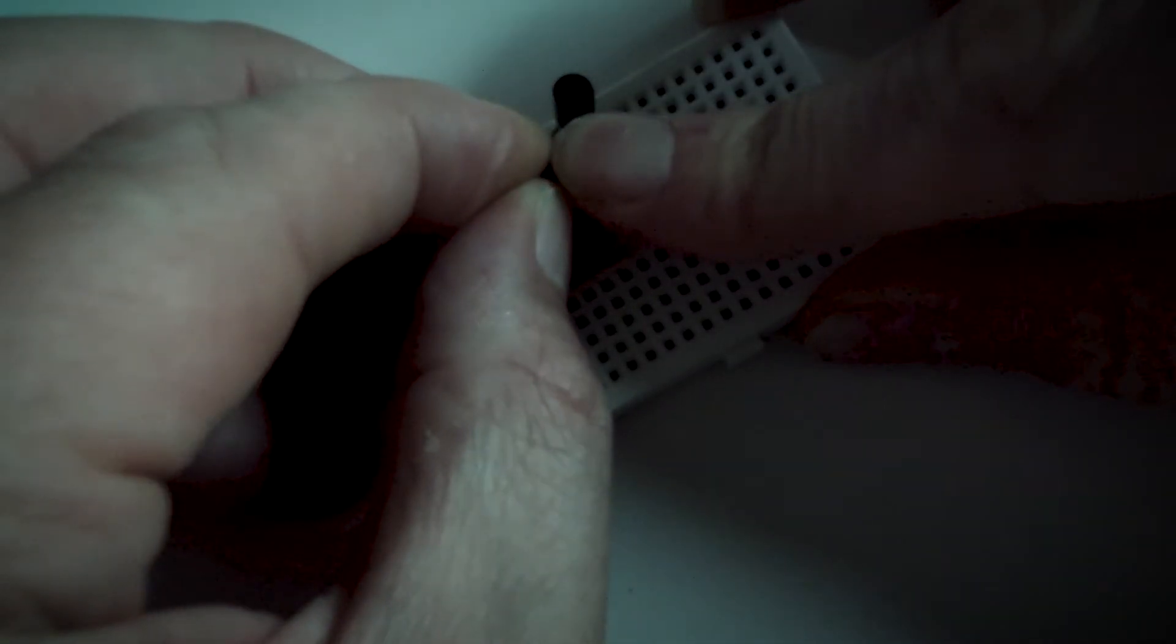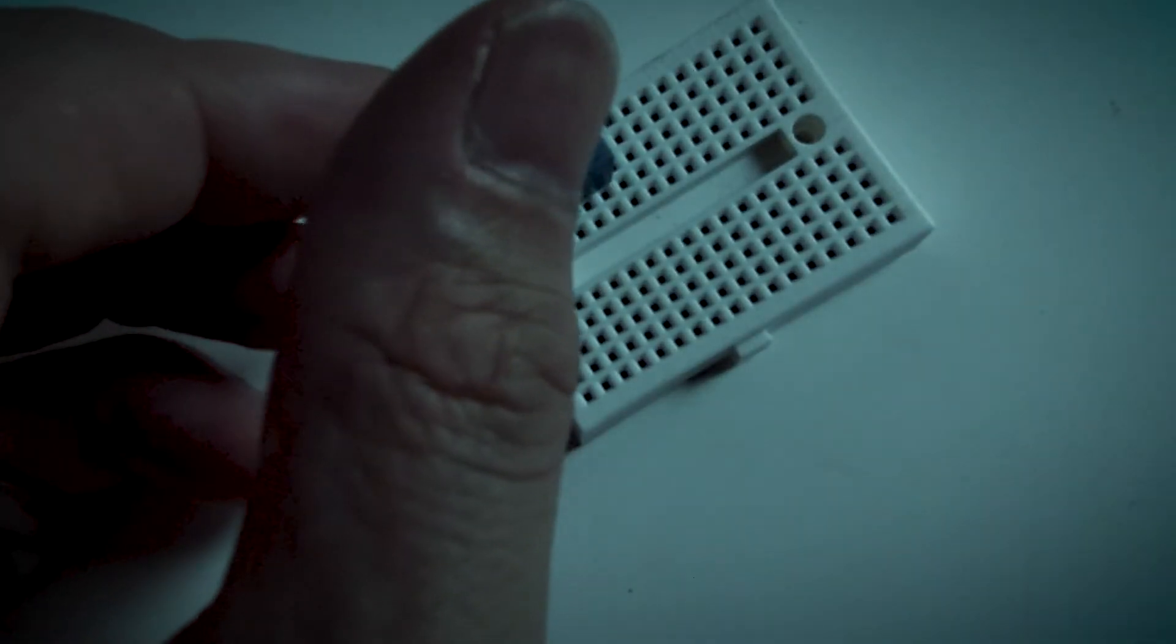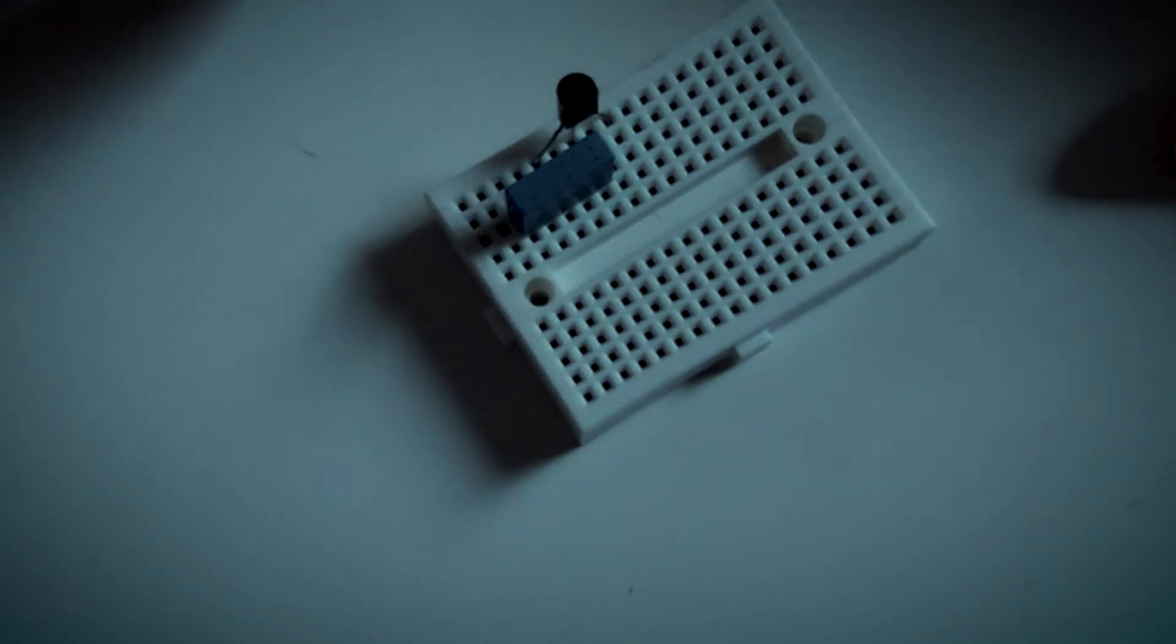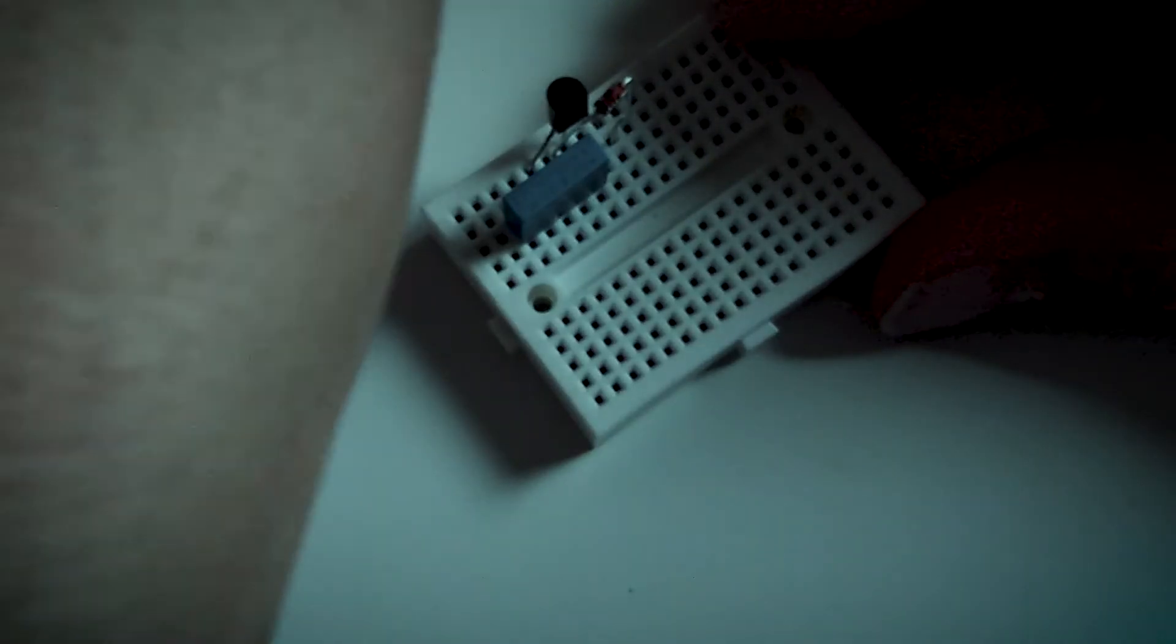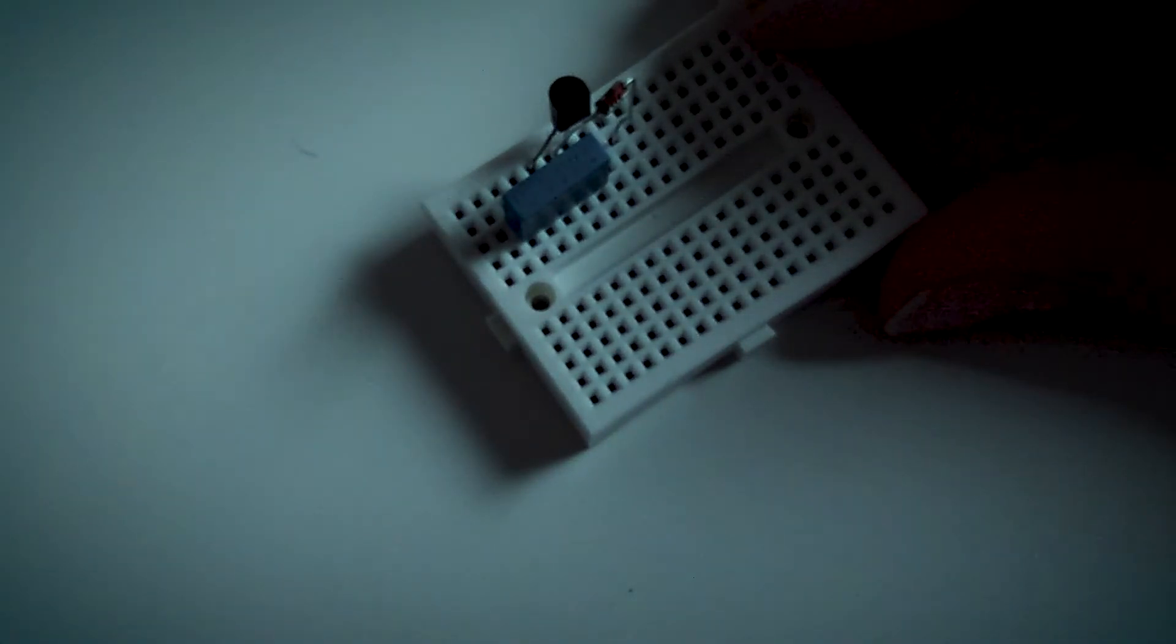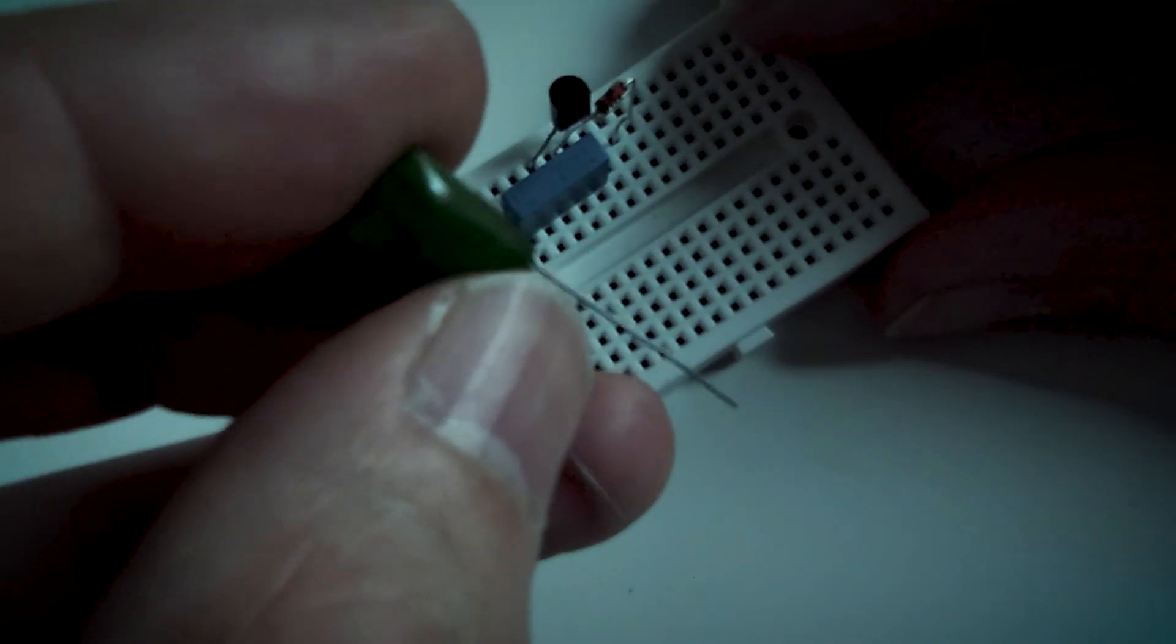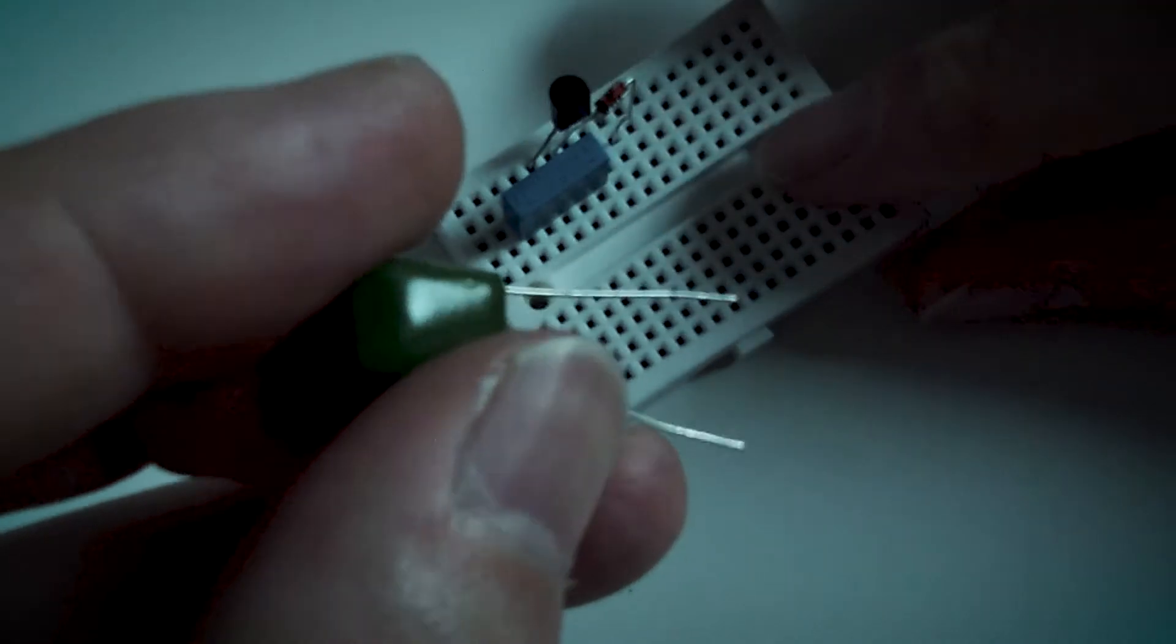Then we're going to get the diode. You want the negative side of the diode to go to the middle leg and the positive to go to the third leg. Then we're going to get the 100 nanofarad capacitor. That's going to go from the third leg and eventually go to our input.